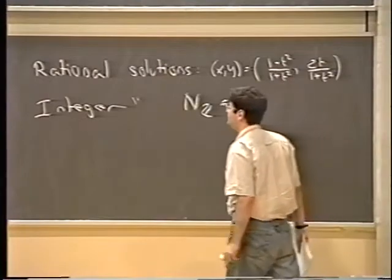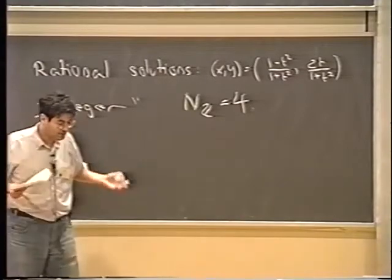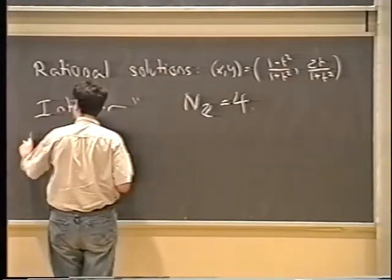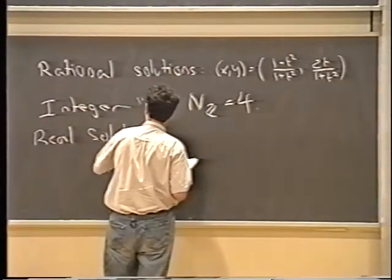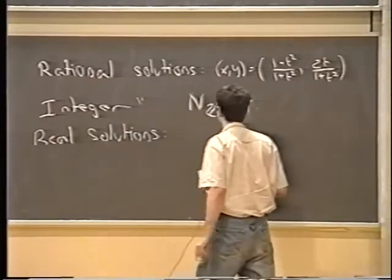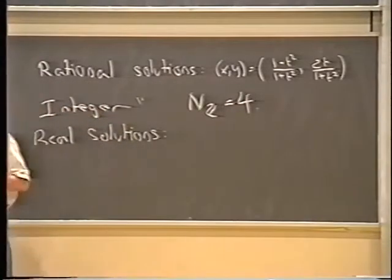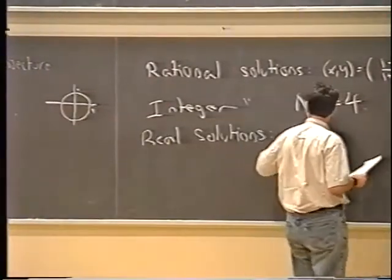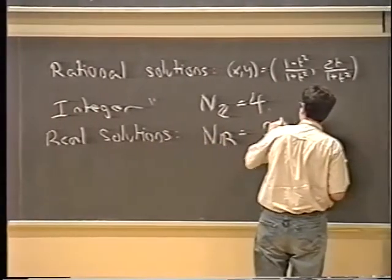It's been known for a while that it's quite fruitful to study Diophantine equations by considering their solutions not just over the rational numbers or over the integers, but over various fields. For example, one can look at the real solutions. There are infinitely many, but one measure of the size of the solution set over ℝ would be the length of the circle. So I'll set N_r, the measure of real solutions, to be 2π.